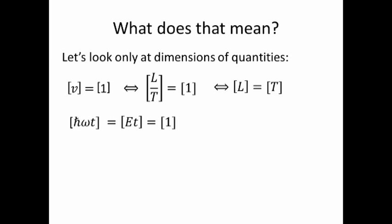Now let's look at h bar omega t. This is just an energy times a time and it's now dimensionless. So this means an energy has a dimension of the inverse of a time and that is an inverse of a length.